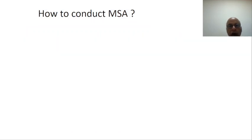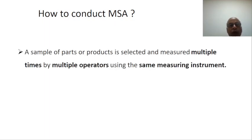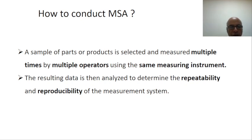How do we conduct MSA? We take a sample part or product, then we measure that same part multiple times by multiple operators using the same measuring instrument. Operators are different and measurements are taken multiple times. Whatever data we get is then analyzed to determine the repeatability and reproducibility of the measurement system for quality control objectives.